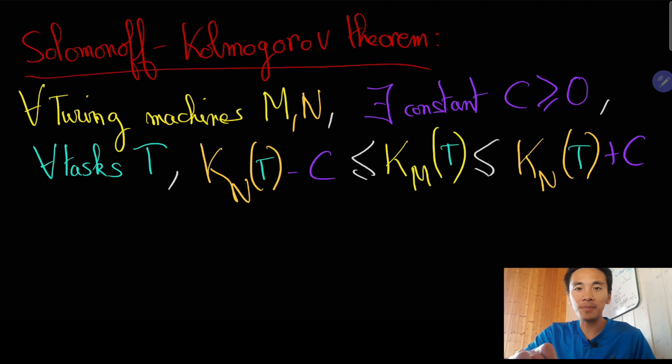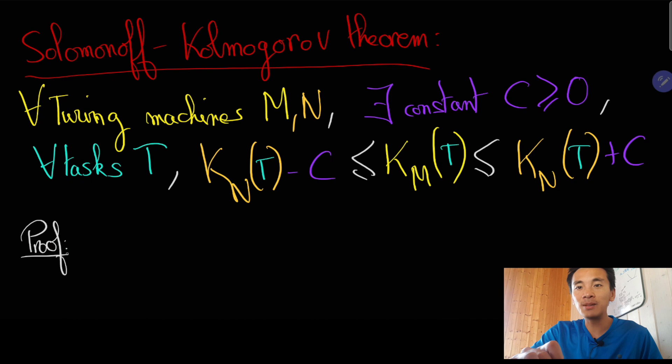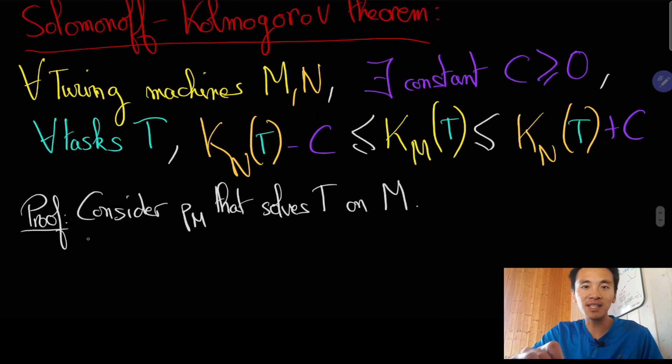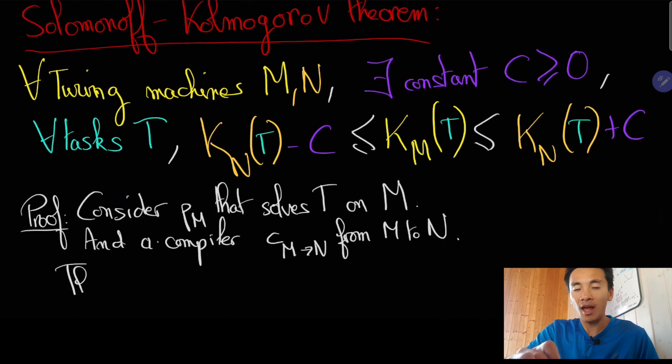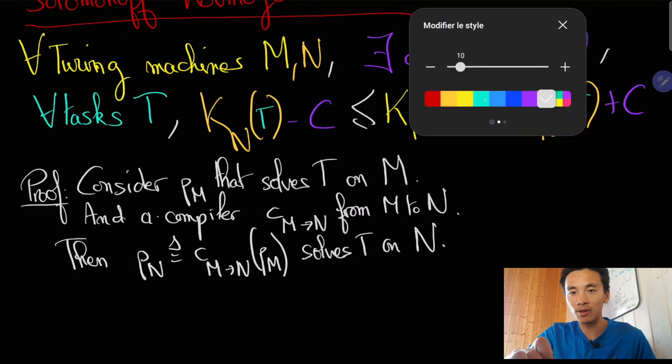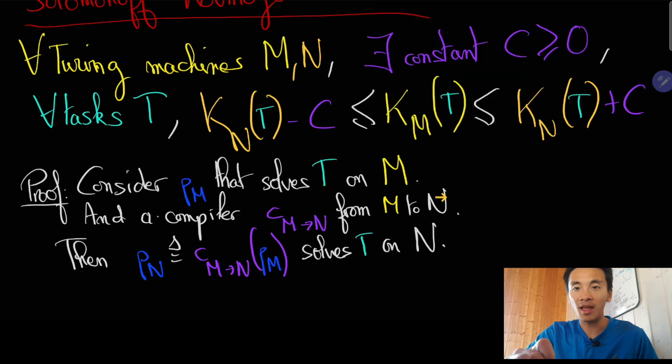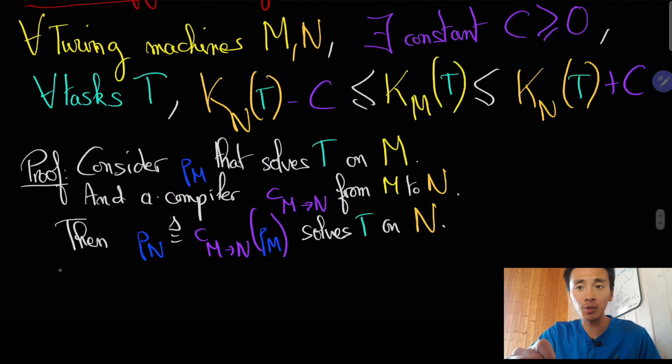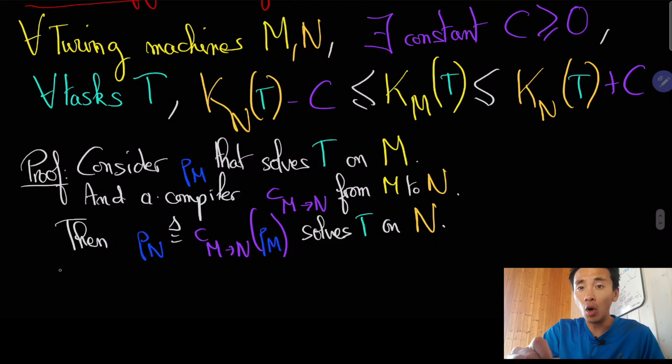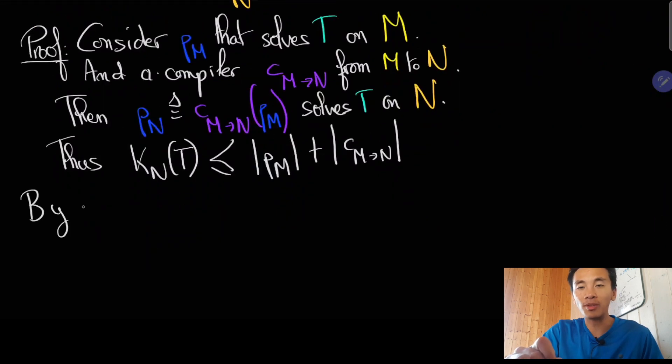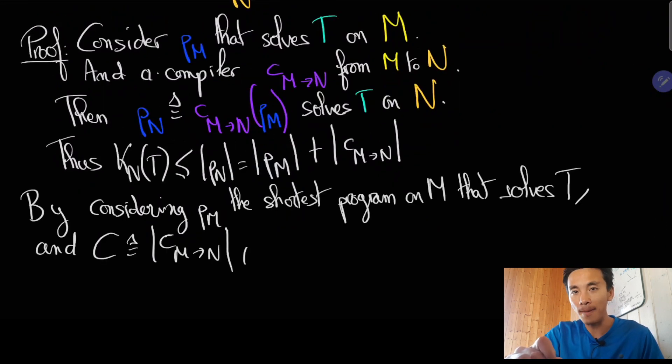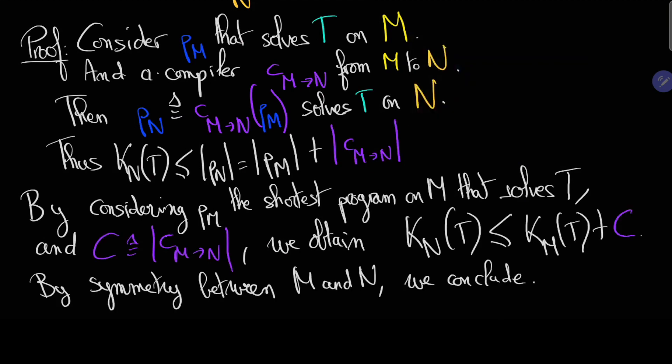After all, if I have a program P_M that solves task T on machine M, then I can simply combine it with the compiler C of M to N, and I would obtain a program P_N, which is the composition of the compiler and the program P_M. This program will be executable on machine N and solves task T. Moreover, its length will be at most the length of the program M plus the length of the compiler, which critically does not depend on the task T.